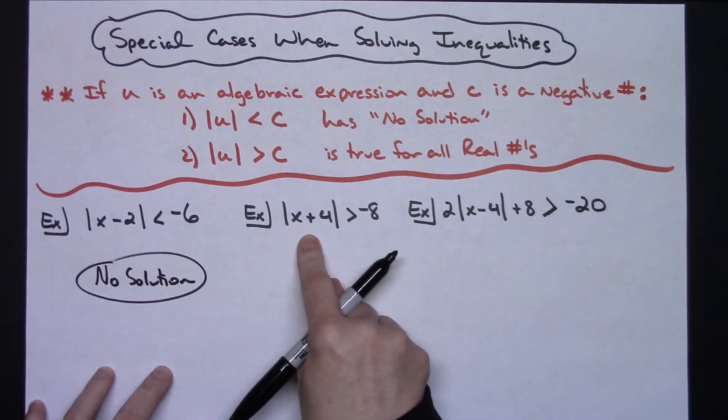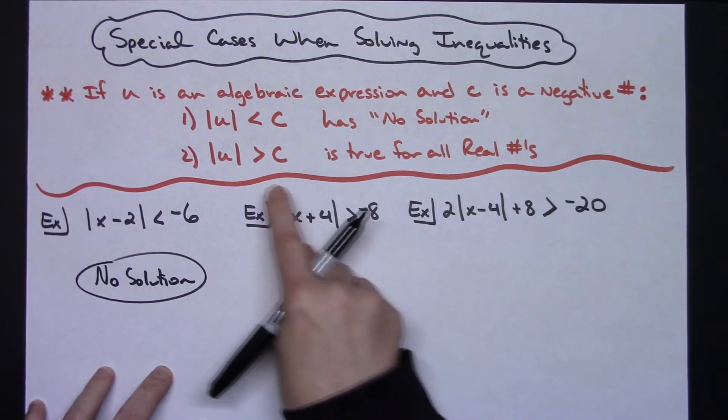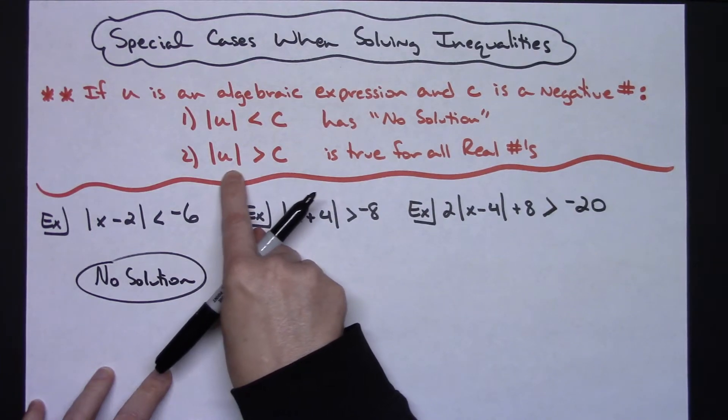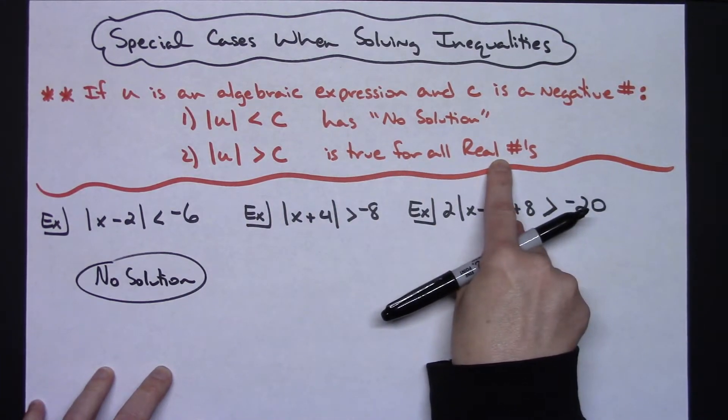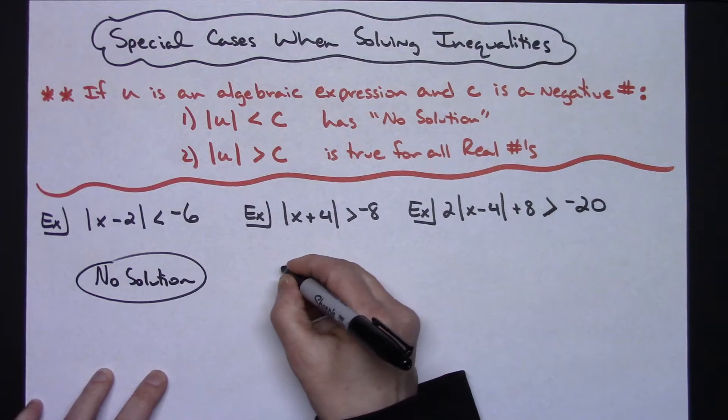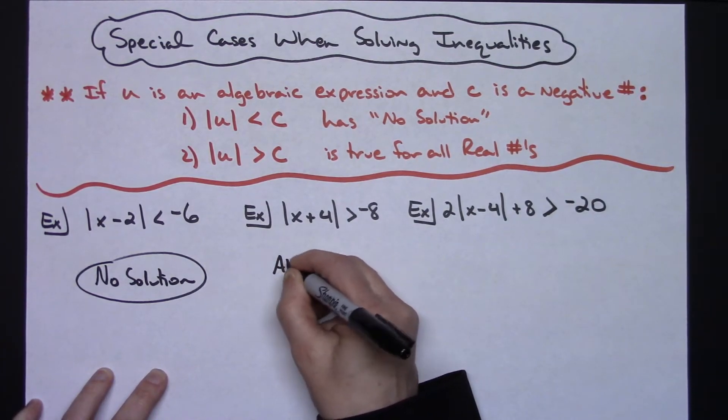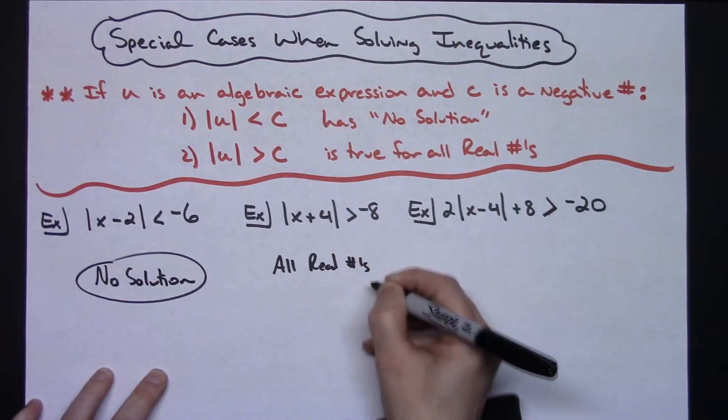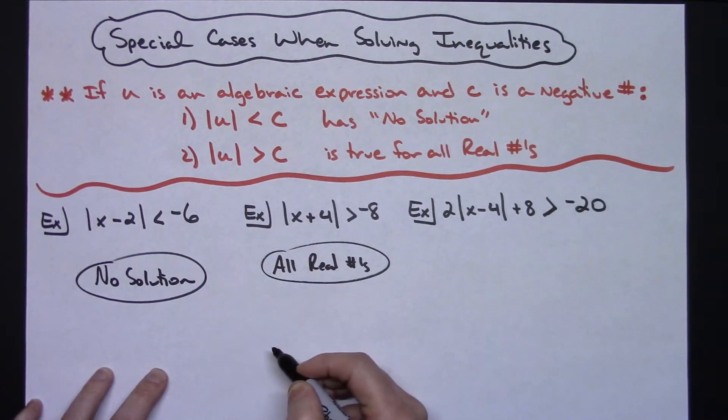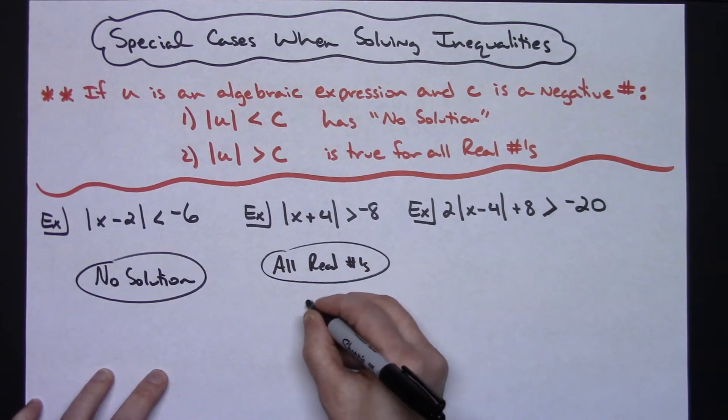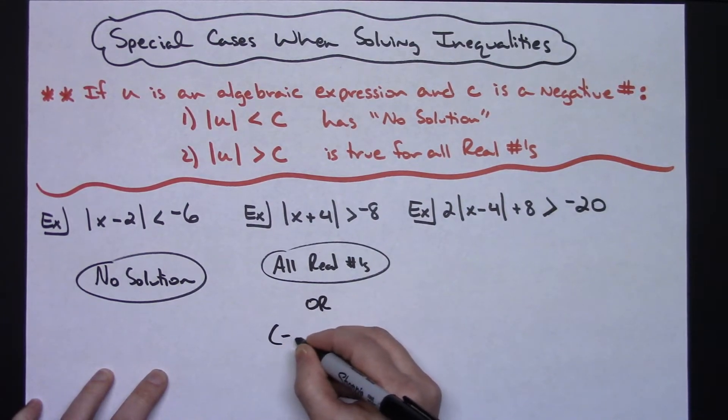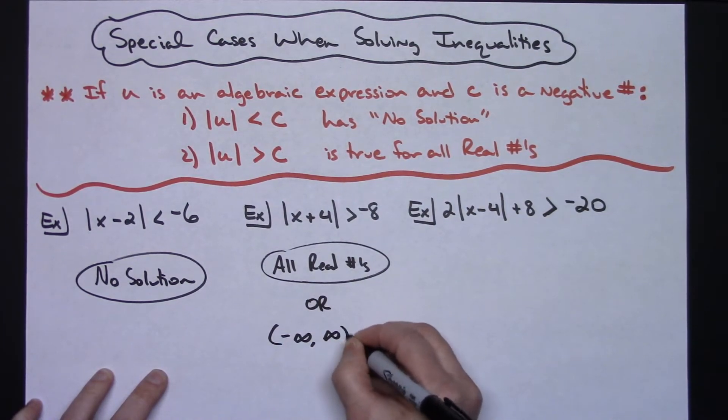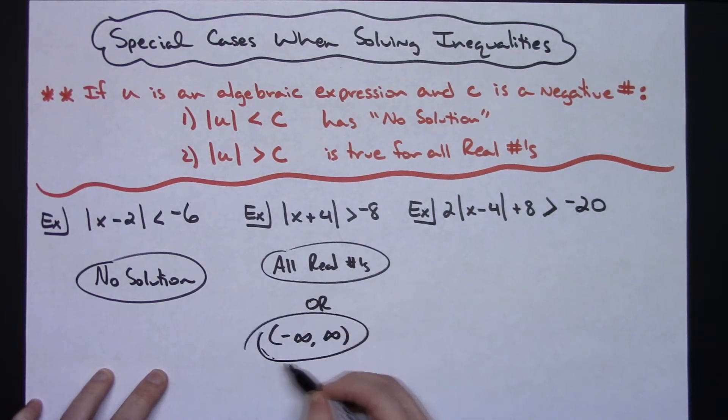Same thing here. My absolute value bars are isolated and it's greater than a negative number. When I've got my absolute value is greater than a negative number, I know it's true for all real numbers. So depending on how you have to write your answer, you could just write all real numbers. That might be an acceptable answer. Someone doing interval notation might want to see negative infinity to infinity. So really either one of those would probably work depending on what kind of format your answer has to be in.